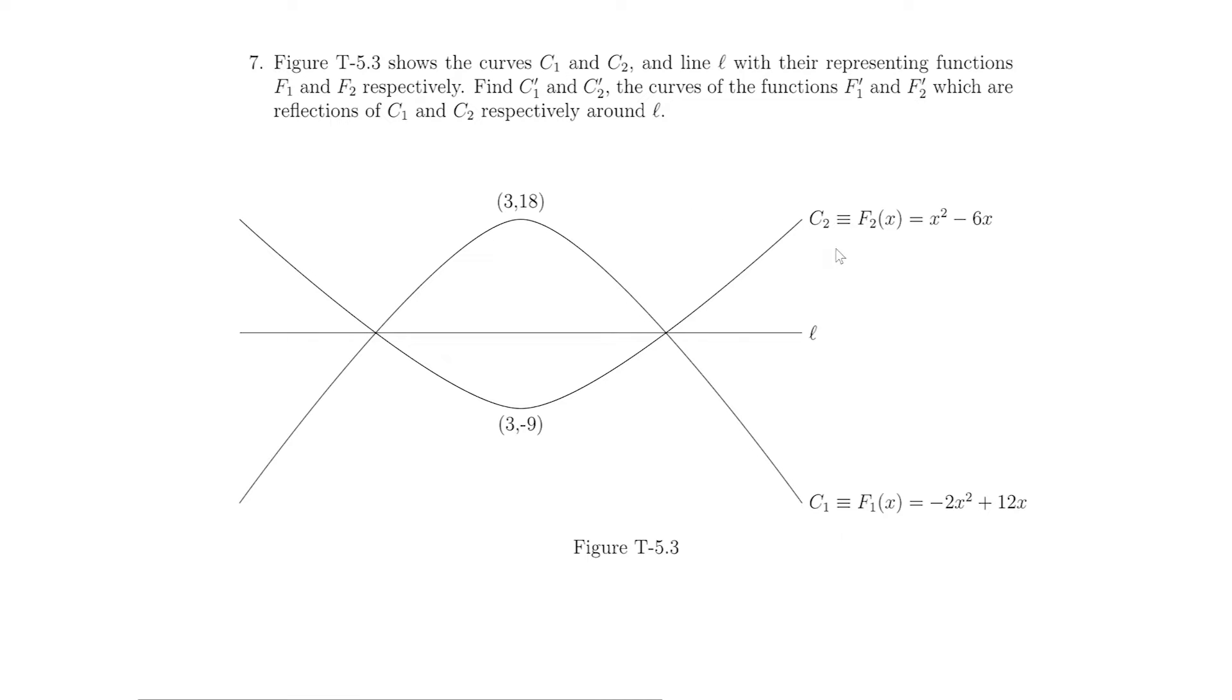In this question, there are these two curves C1 and C2 which are both quadratic curves, and there is this line L which is passing through these two intersection points.